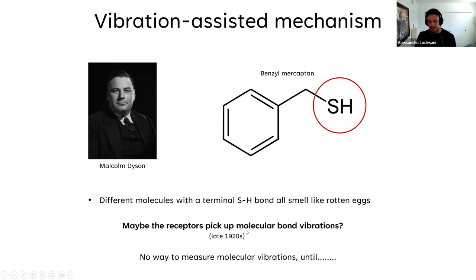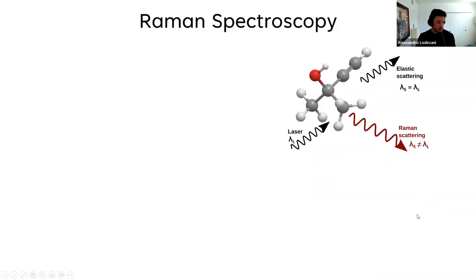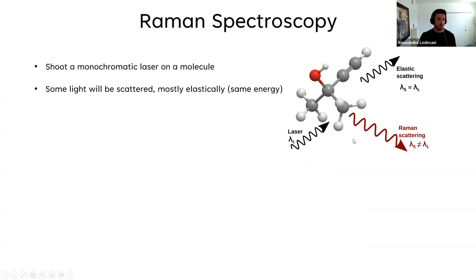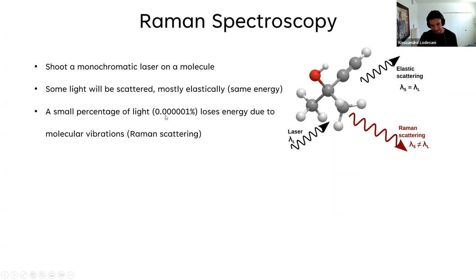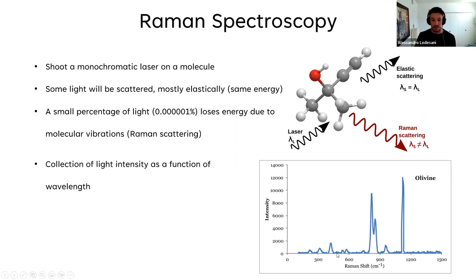At the time, in the late 1920s, there was no way to measure molecular vibrations. Then Raman spectroscopy was invented. It works by shooting a monochromatic laser at molecules: most light scatters elastically at the same energy, but a small fraction — about 0.01% — scatters inelastically, losing energy by interacting with molecular vibrations. This is Raman scattering. By collecting scattered light intensity as a function of wavelength you get a spectrum, where each peak corresponds to a specific molecular bond vibration.